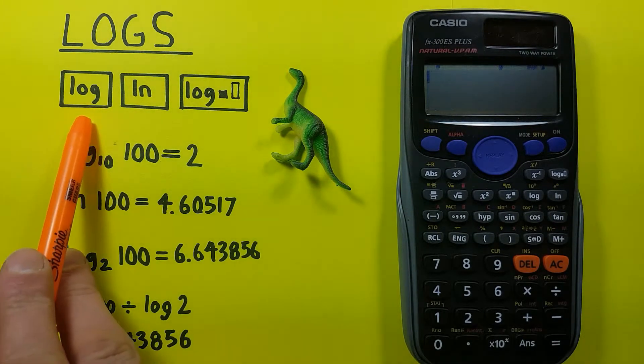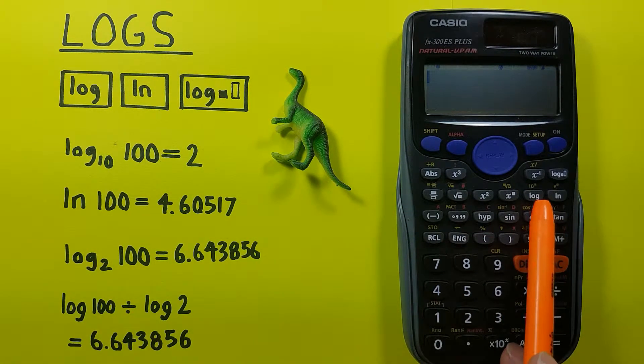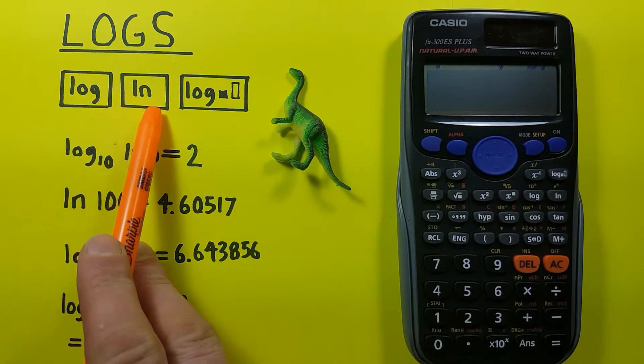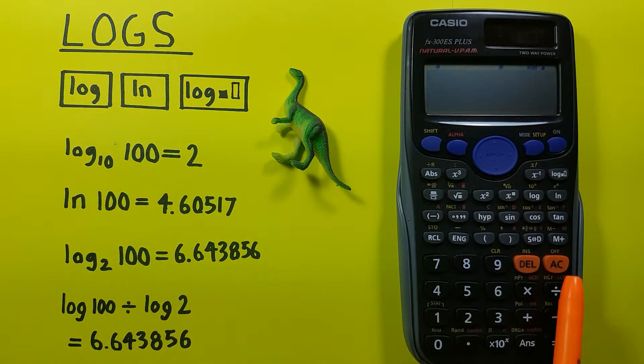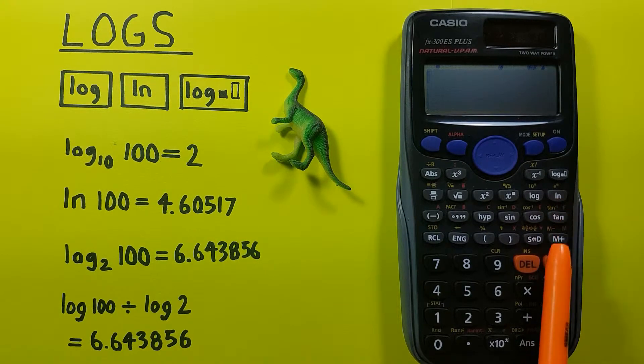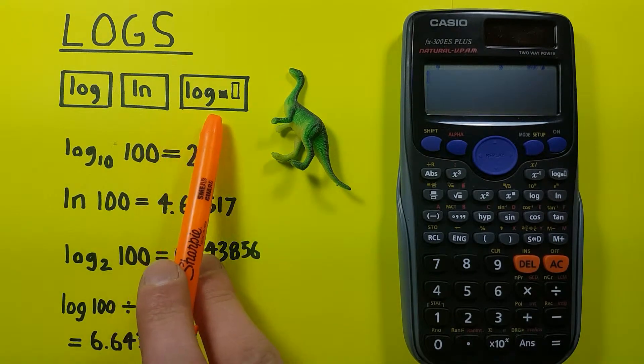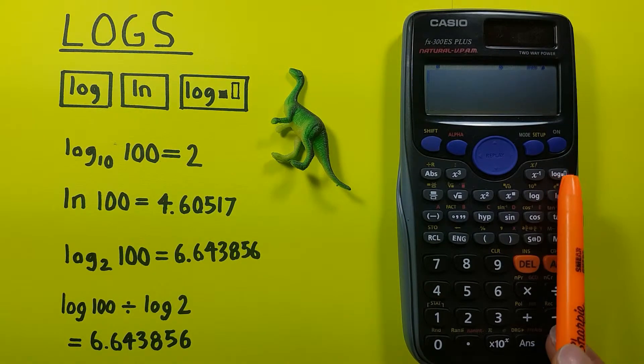To do this we'll be using the log key, it looks like this, located here. The LN key or natural log key that looks like this and is located here, and the miscellaneous log key looks like this and is located here in the top right corner.